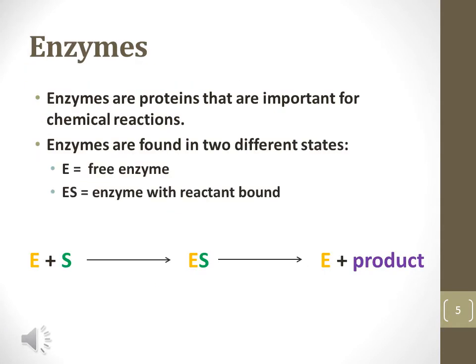Enzymes are proteins that are important to chemical reactions because they allow reactions to take place more quickly. Enzymes are found in two different states: free or bound to a reactant. This equation shows a free enzyme along with an unbound substrate. The arrow in the equation indicates a reaction takes place. In this case, the substrate has bound to the active site of an enzyme. Finally, the enzyme separates from the substrate after the chemical reaction takes place and the products are released.